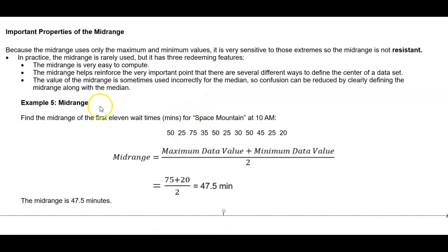So here's an example of midrange, Example 5. Find the midrange of the first 11 wait times in minutes for Space Mountain at 10 AM. We want to get the midrange, which is equal to the maximum data value plus the minimum data value divided by 2. The maximum data value in our data set is 75.